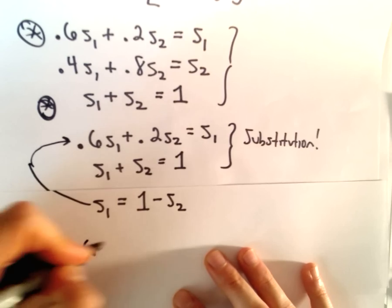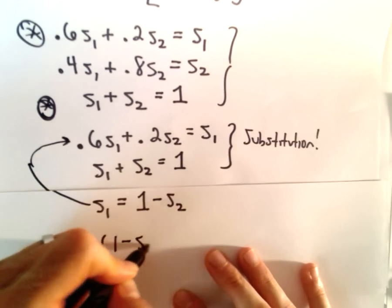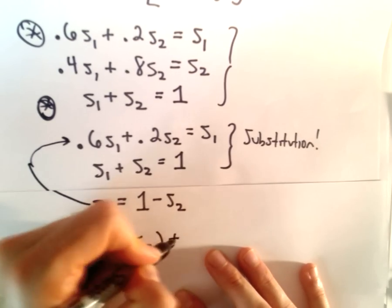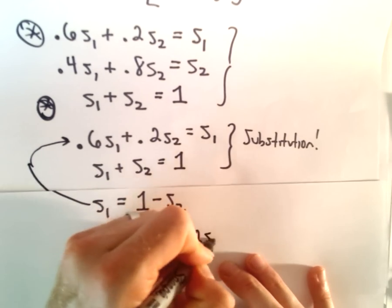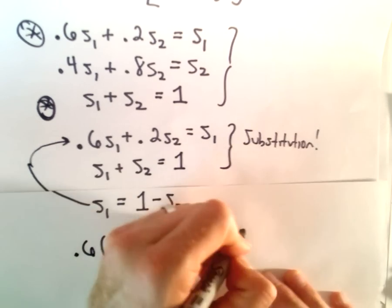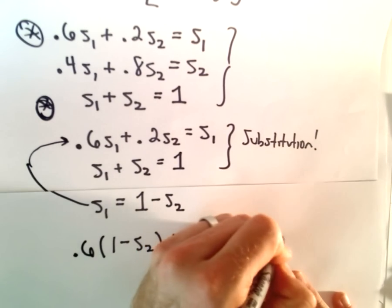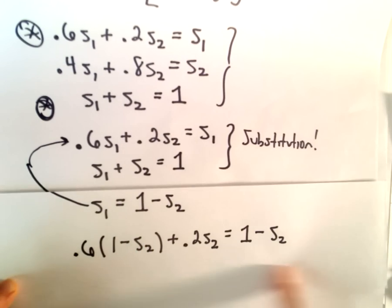We've got 0.6 multiplied by S₁, which is going to be 1 minus S₂, plus 0.2 times S₂. And that's going to equal S₁, which again is going to be 1 minus S₂. So notice now we have an equation involving only S₂.